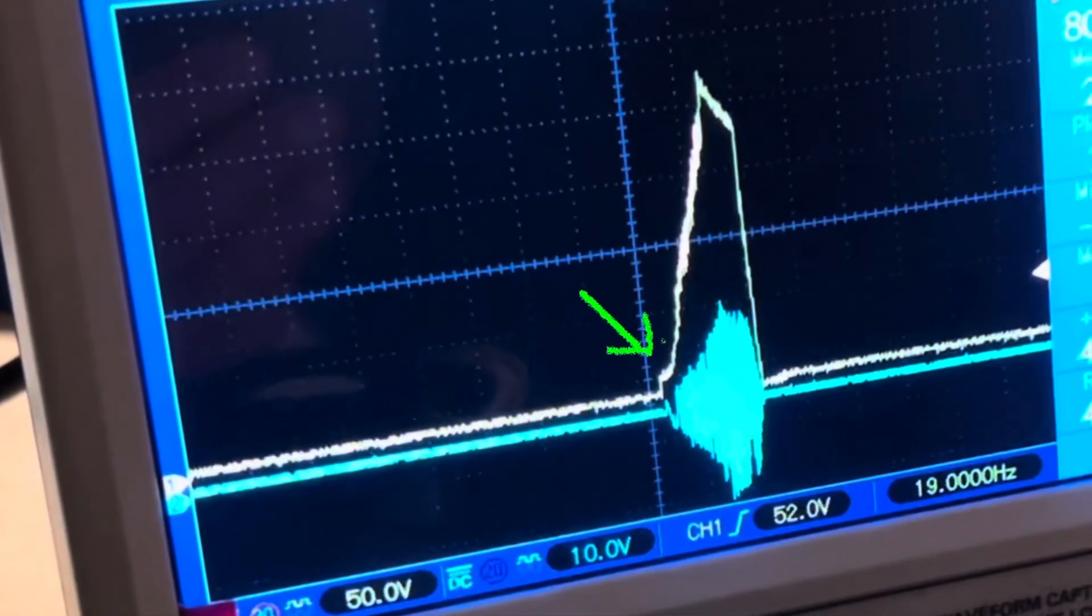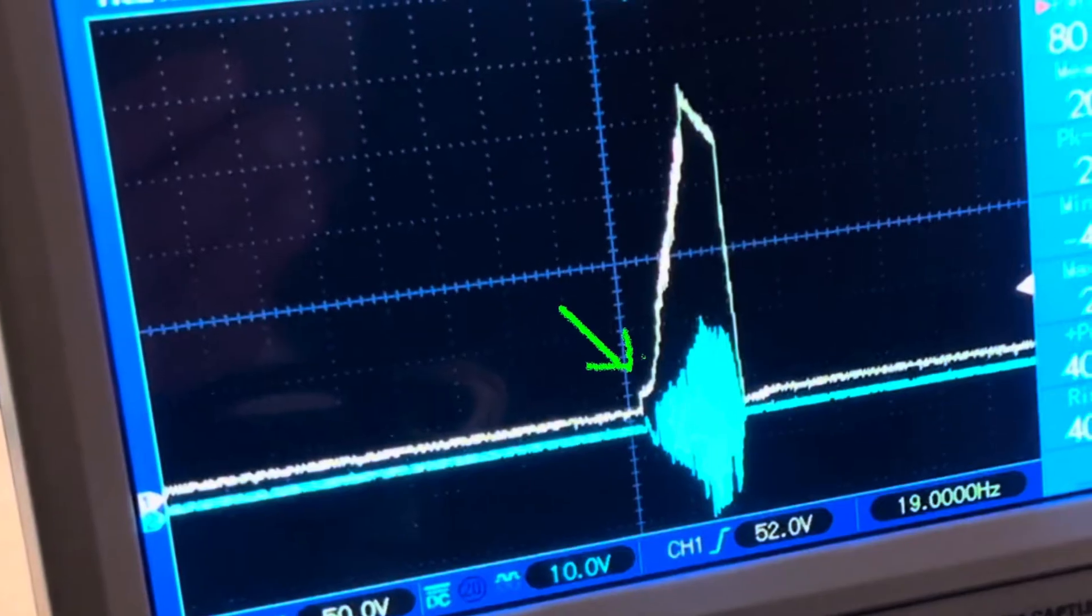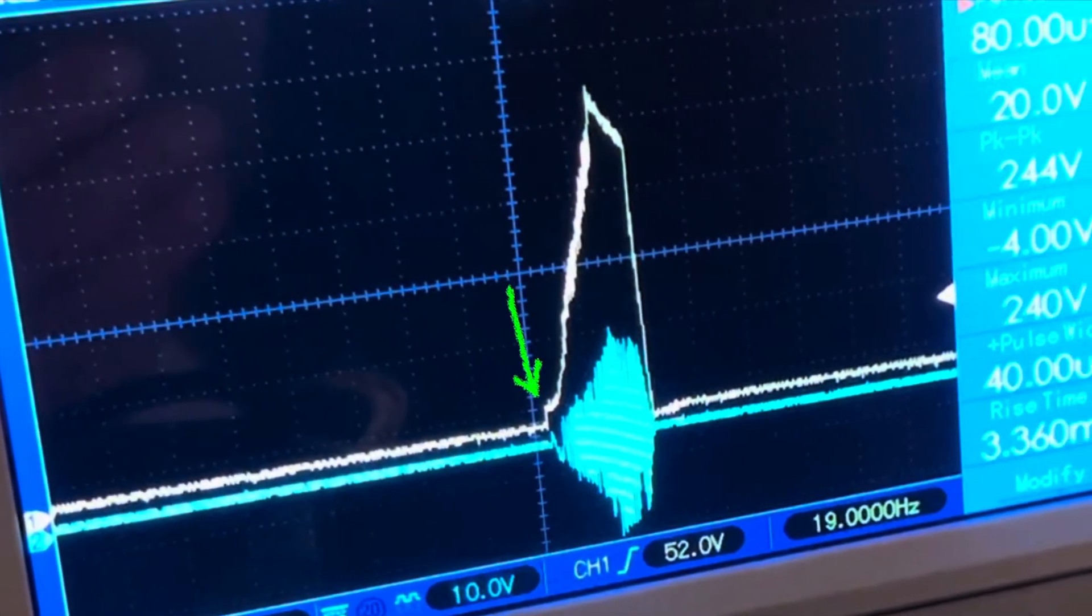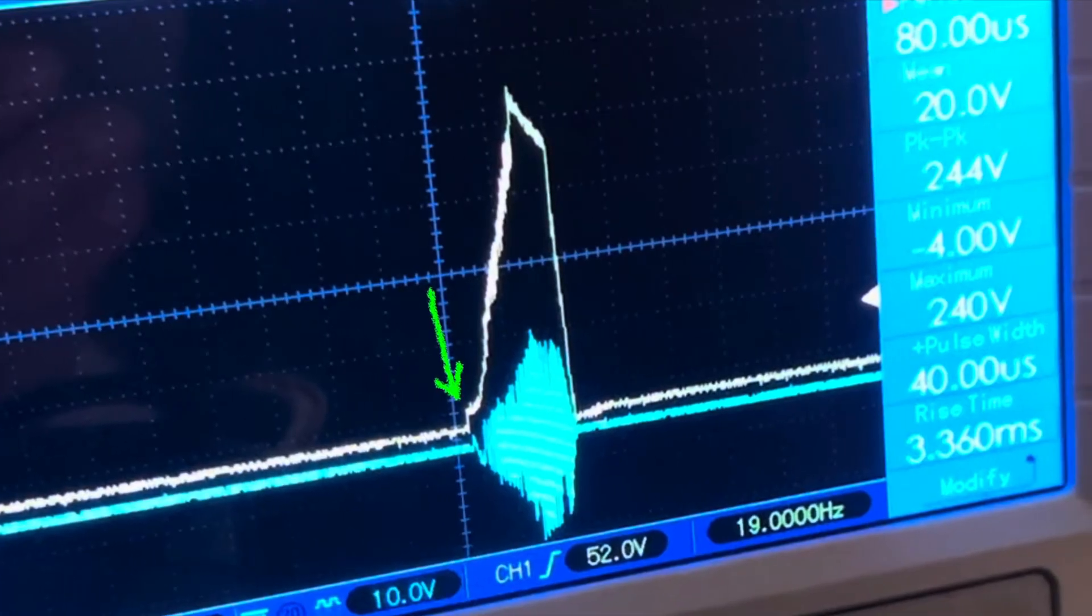To get the spontaneous oscillations going and the feedback started so the Tesla coil runs, you need a little step off shown here, also known as a wick. This is about 30 volts typically.